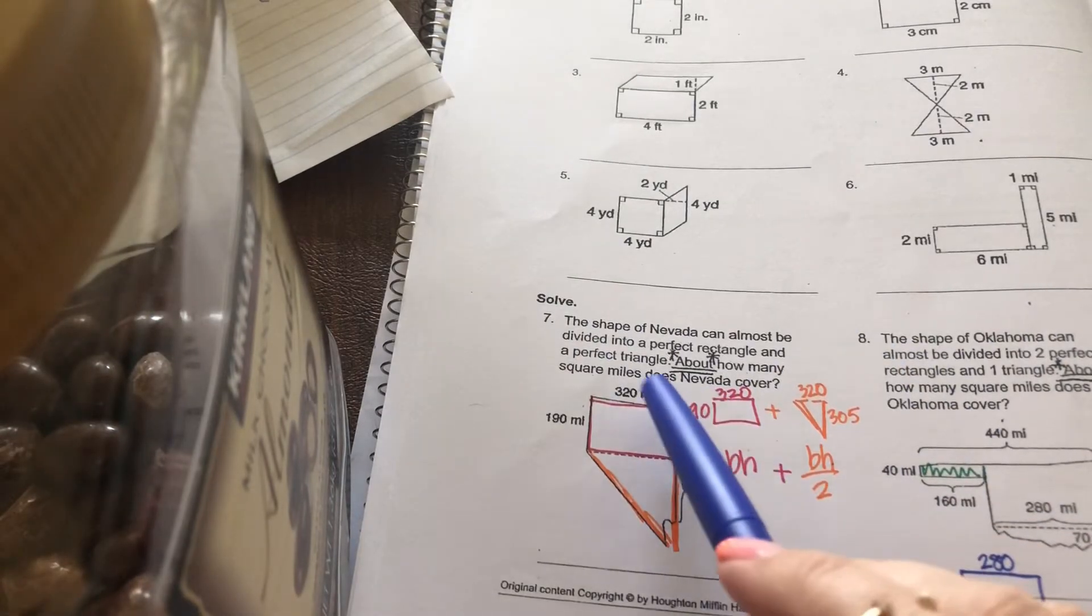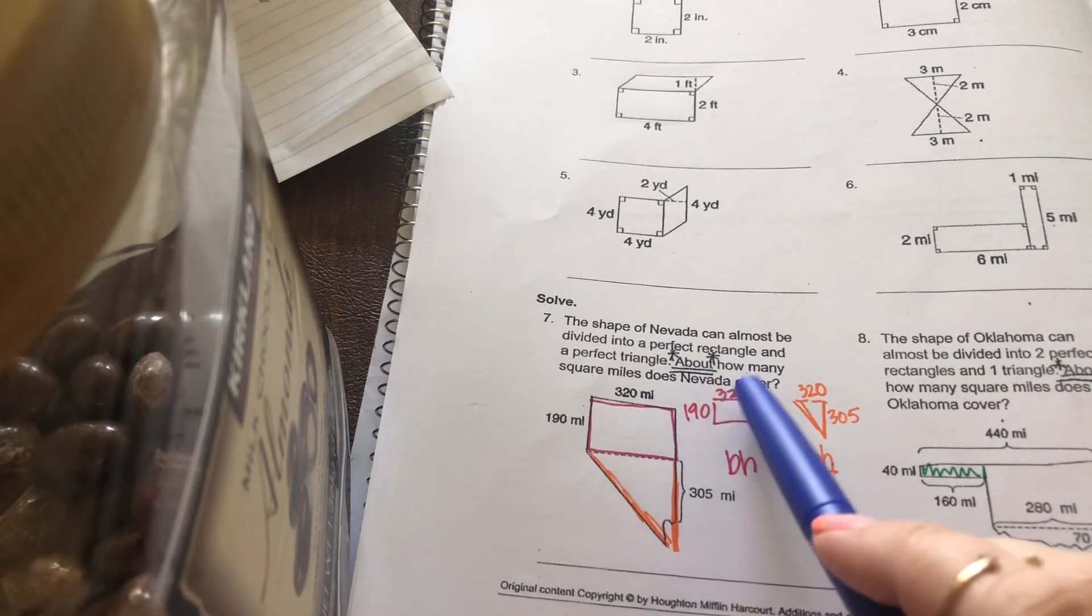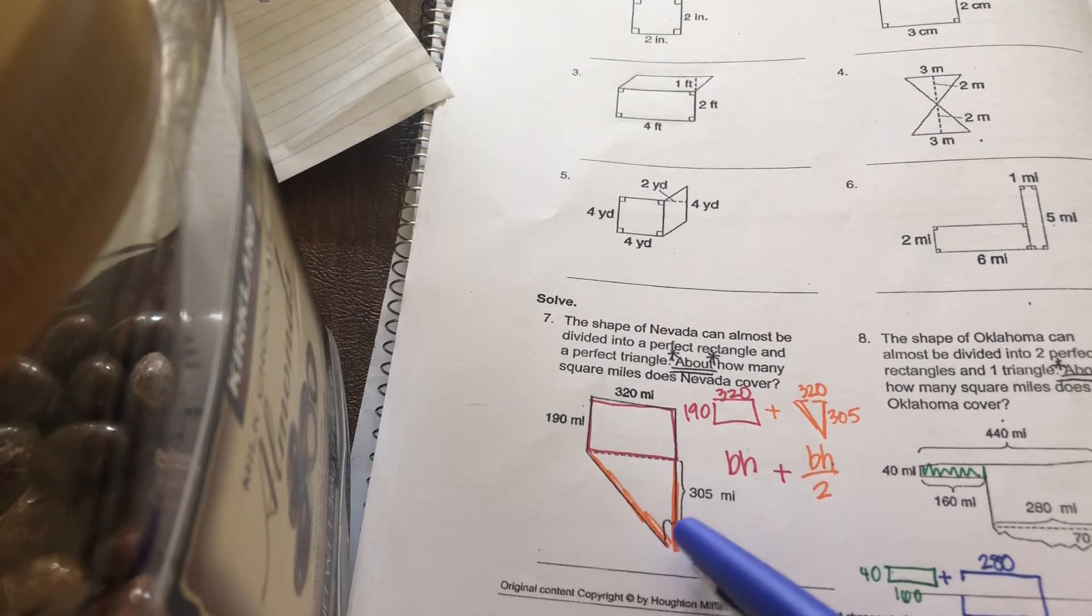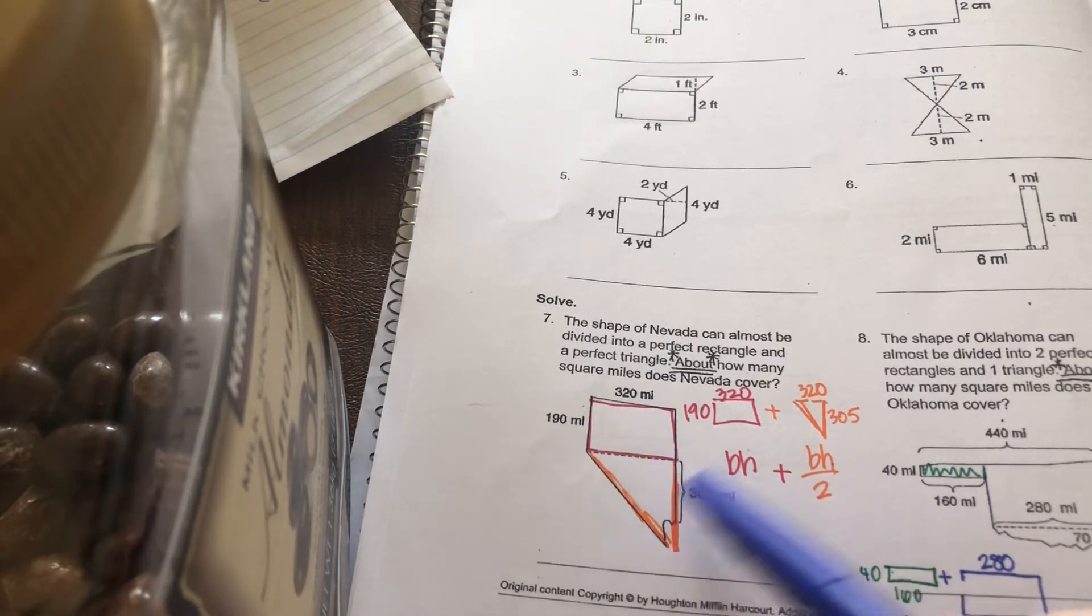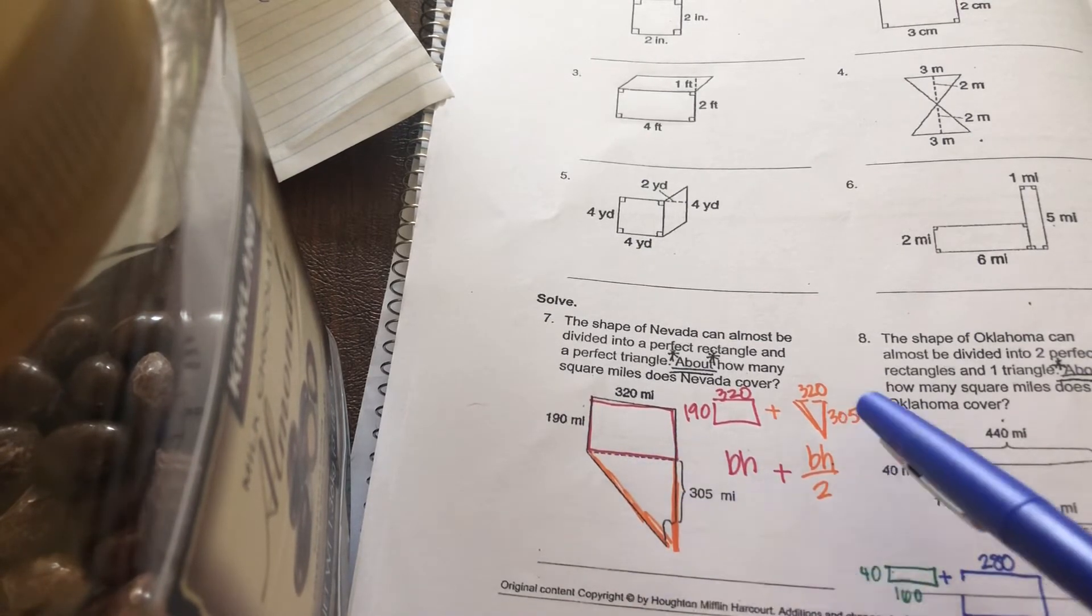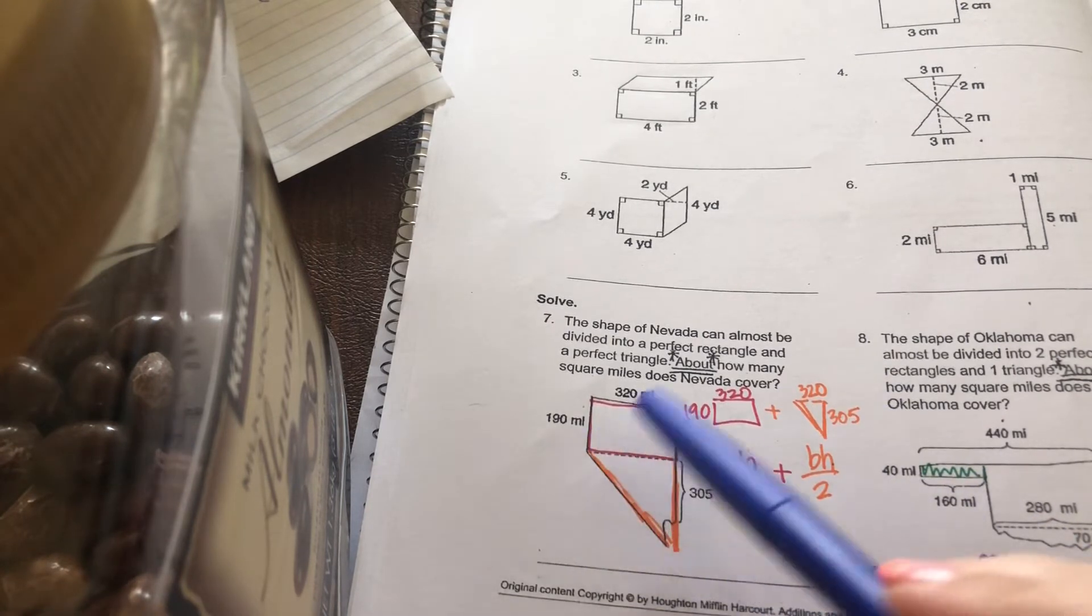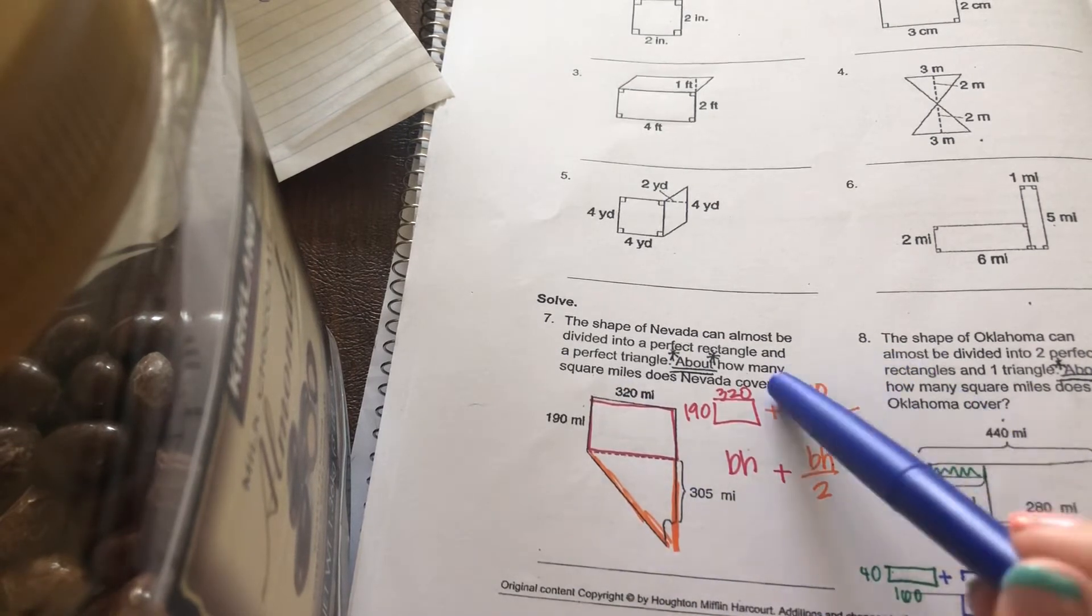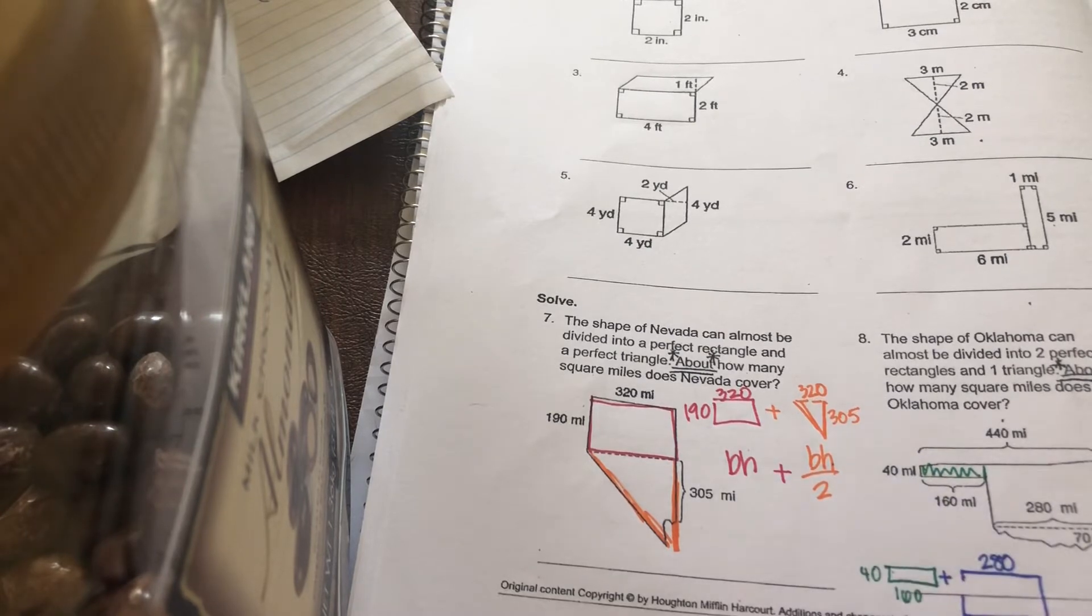It says this is Nevada, and you want to find about how many square miles does it cover. So it's not precise. I know that on your paper there's this little cutout part, but if I were to extend this, this looks like a triangle, right? And this triangle has a height of 305 and a base of 320 because this is the same as this. So here is your triangle 320 by 305 and base times height divided by 2. You're going to plug those numbers in and solve.